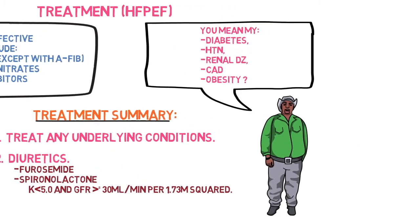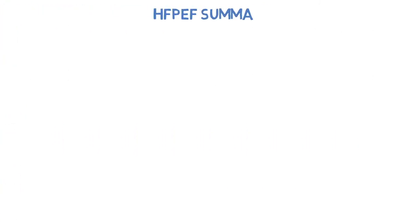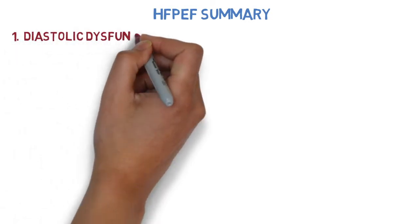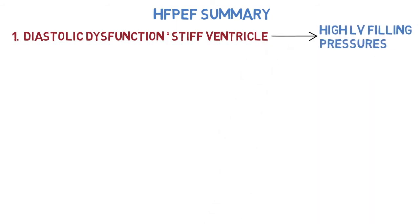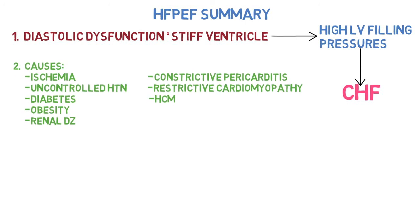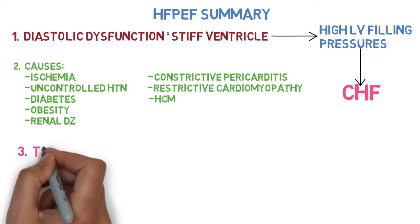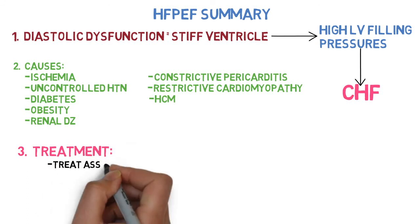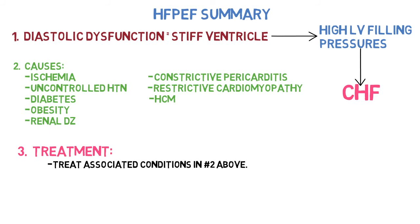Summary for heart failure with preserved ejection fraction: number one, diastolic dysfunction equals a stiff ventricle, leading to high left ventricular filling pressures and congestive heart failure. Number two, causes include ischemia, uncontrolled hypertension, diabetes, obesity, renal disease, constrictive pericarditis, restrictive cardiomyopathy, and hypertrophic cardiomyopathy. Number three, treatment — treat associated conditions and use diuretics.